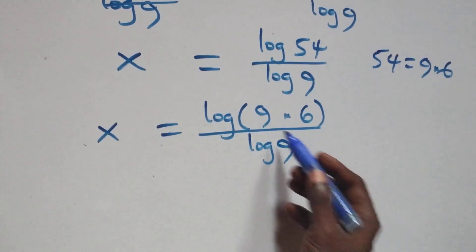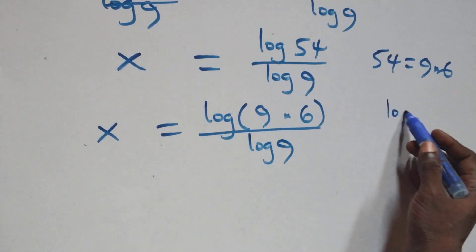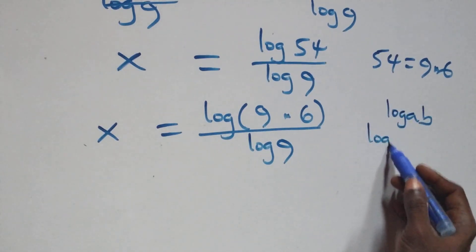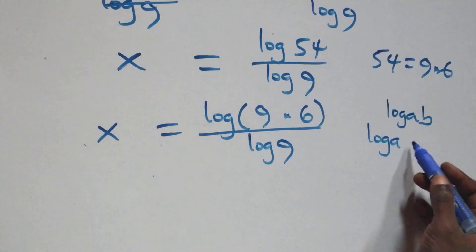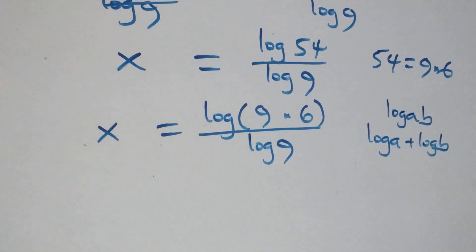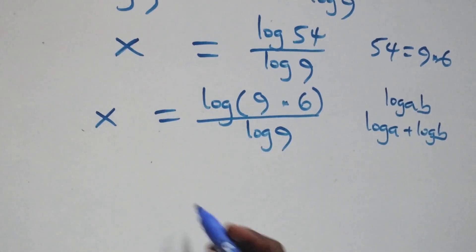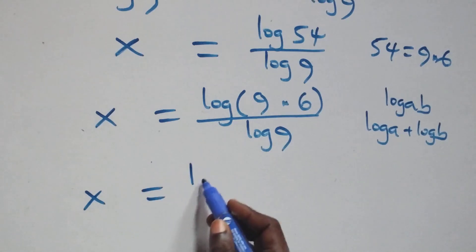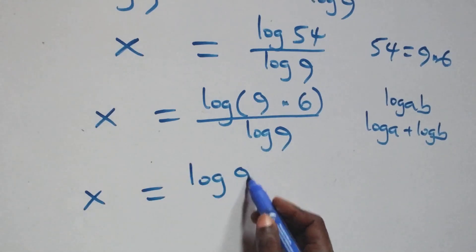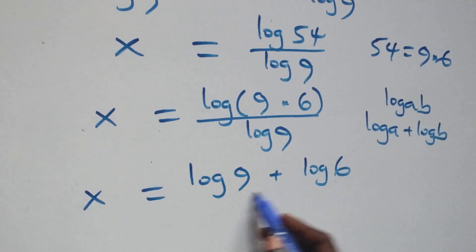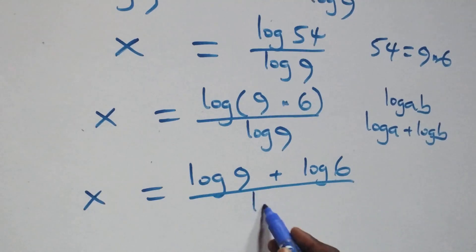This follows the law of logarithms: when we have log a times b, this is the same thing as log a plus log b. That is, all we have becomes x equals to log 9 plus log 6, all over log 9.